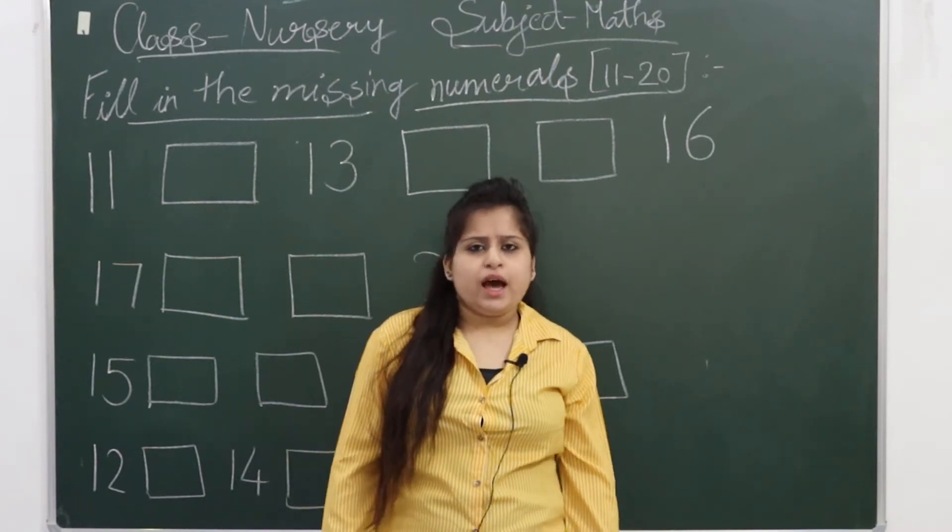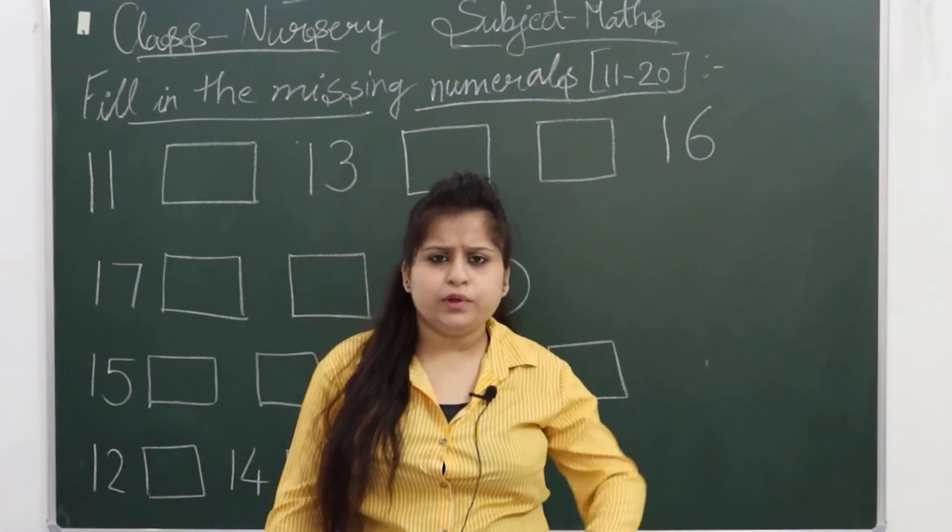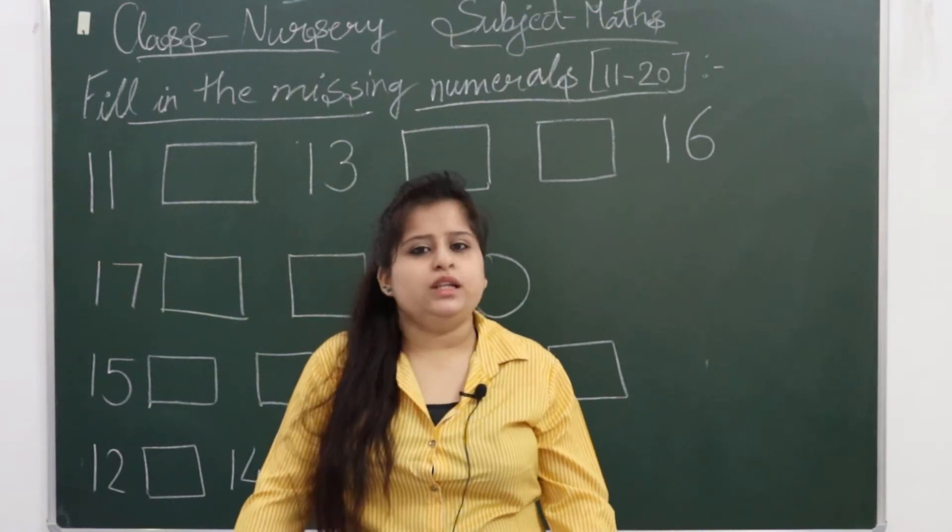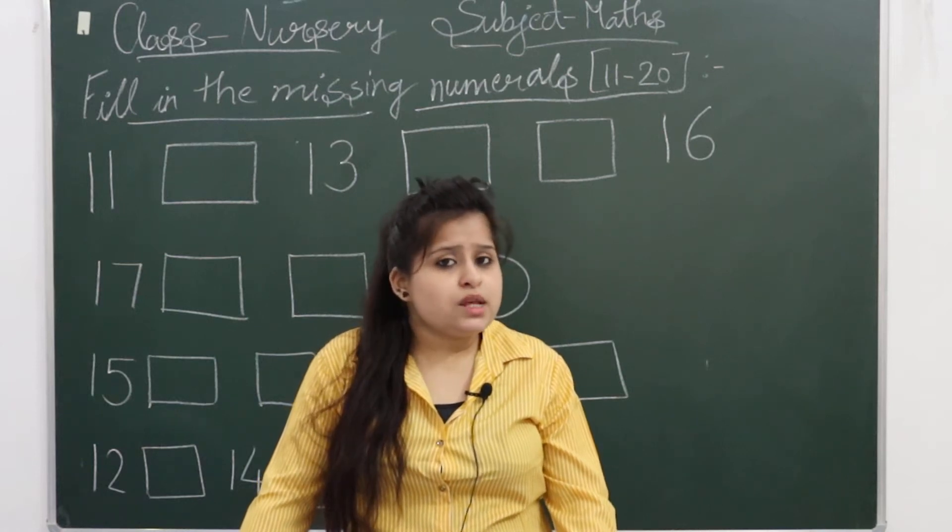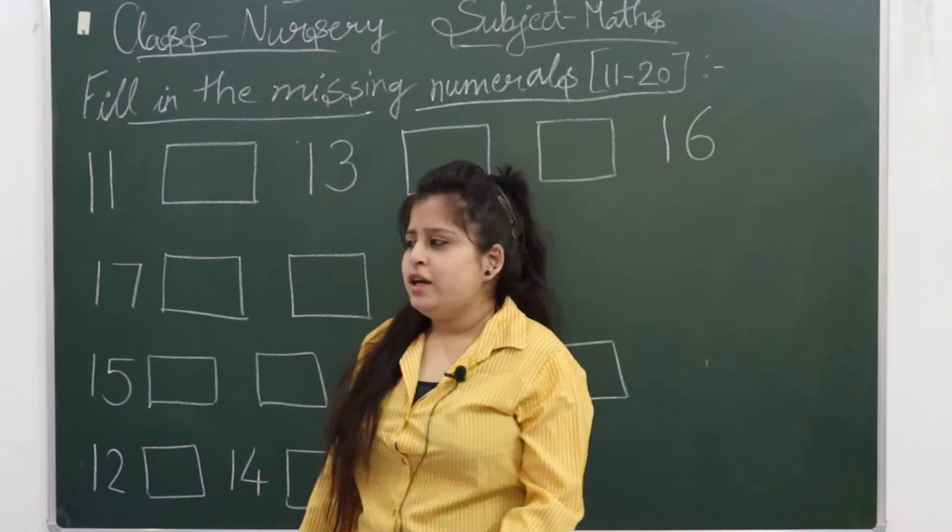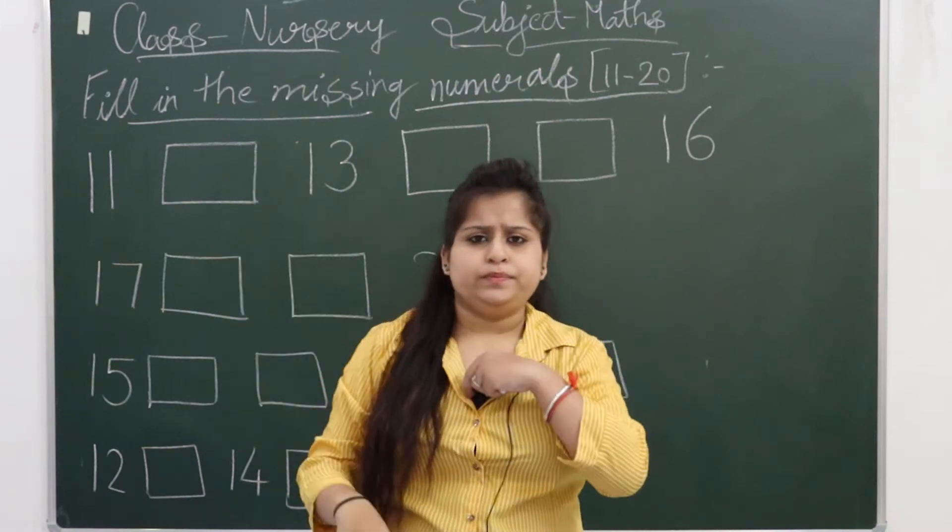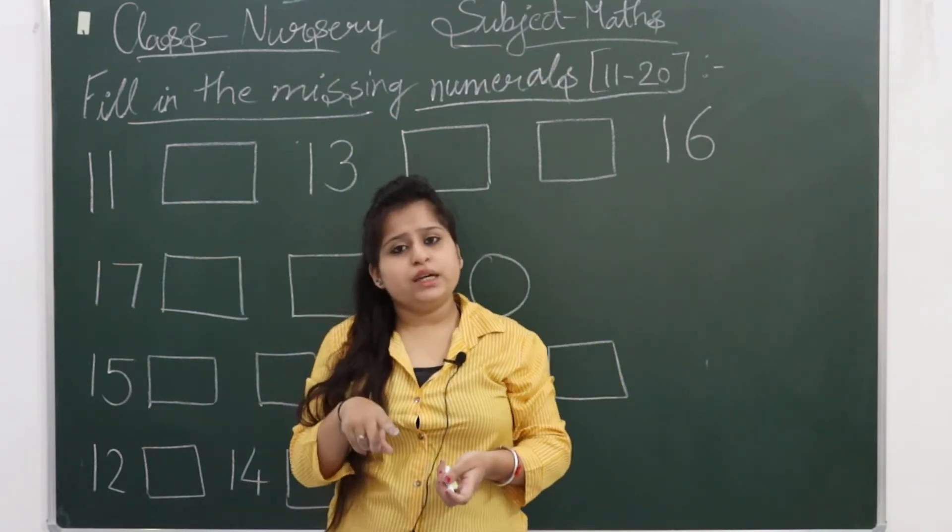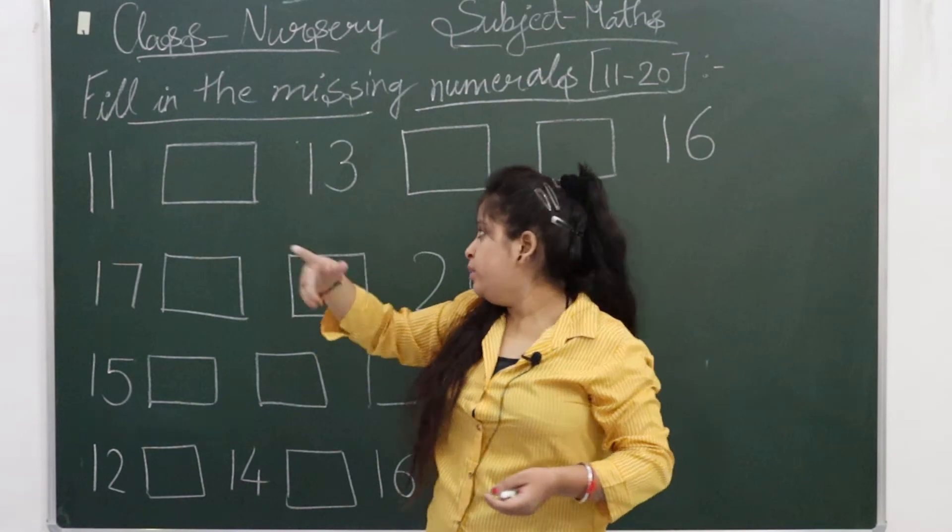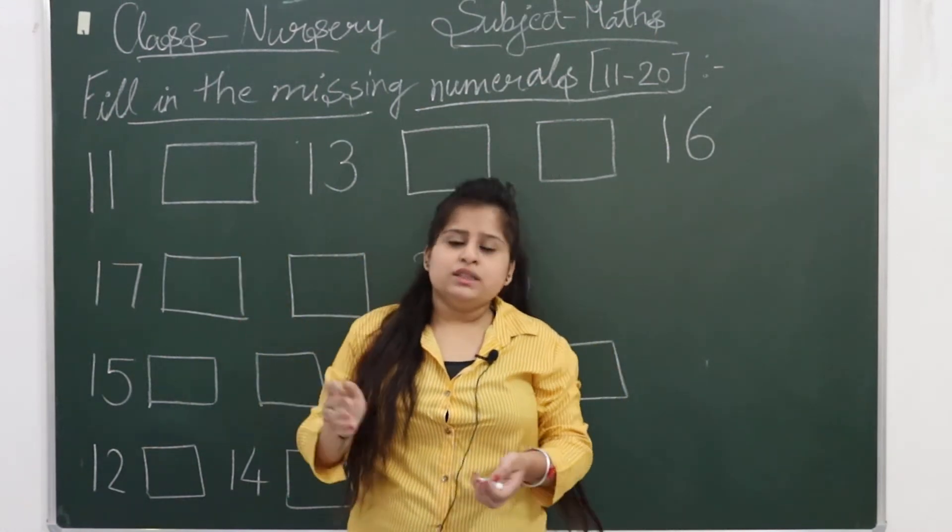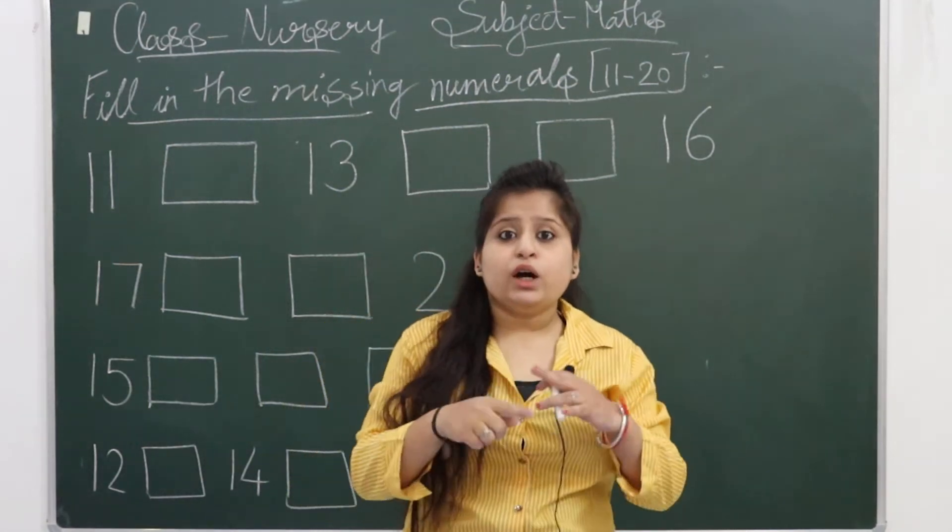Study time! As you all know, we are done with the activity from the previous class: fill in the missing numerals 1 to 10. So now we are proceeding to the next numbers, that is 11 to 20. Our activity is fill in the missing numerals 11 to 20. The meaning everyone knows - what we did in 1 to 10. The missing numbers, like after 1 comes 2. If 2 was not there, we had to write 2, right? Same like that, today we'll do 11 to 20.